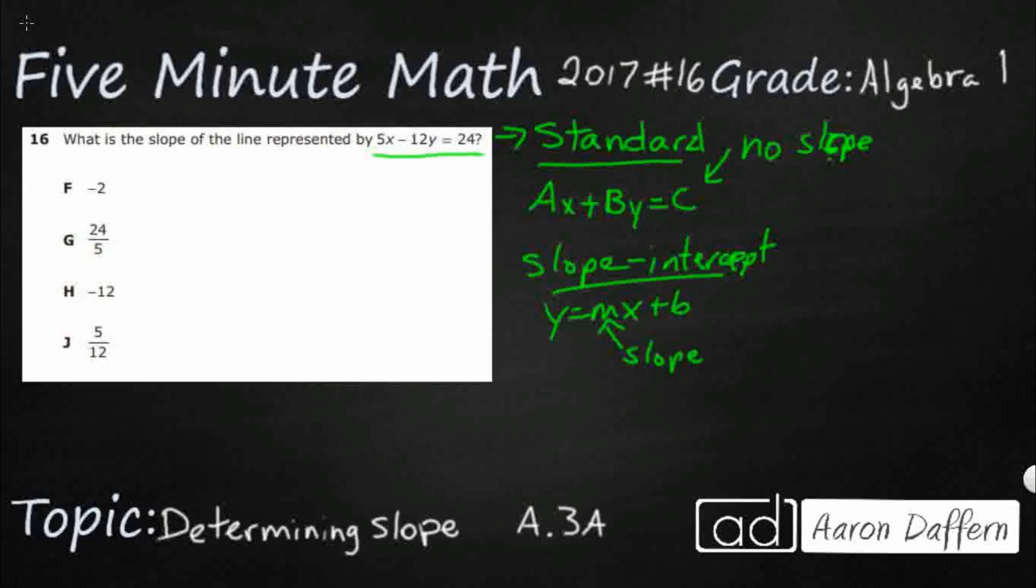There's also a third one. It's the point slope. You're rarely going to find something given to you in this form. But it's this, and this is also on your reference materials. Y minus Y1 equals M times X minus X1. And that's also the slope. So our slope is represented by M.